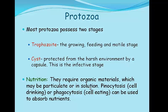The cyst stage is protected from the harsh environment by a tough capsule. Protozoa feed by ingesting organic material in solid or liquid form — solid form by phagocytosis, which is also known as cell eating, or liquid form by pinocytosis, or cell drinking.